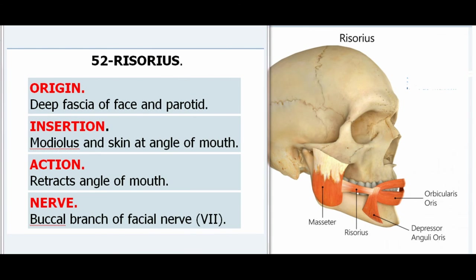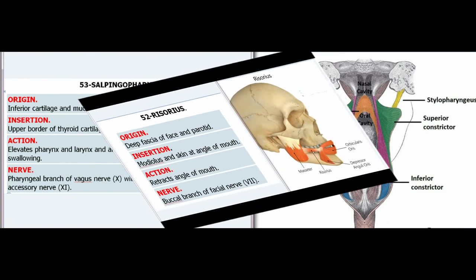52. Risorius. Origin: Deep fascia of face and parotid. Insertion: Modiolus and skin at angle of mouth. Action: Retracts angle of mouth. Nerve: Buccal branch of facial nerve (VII).